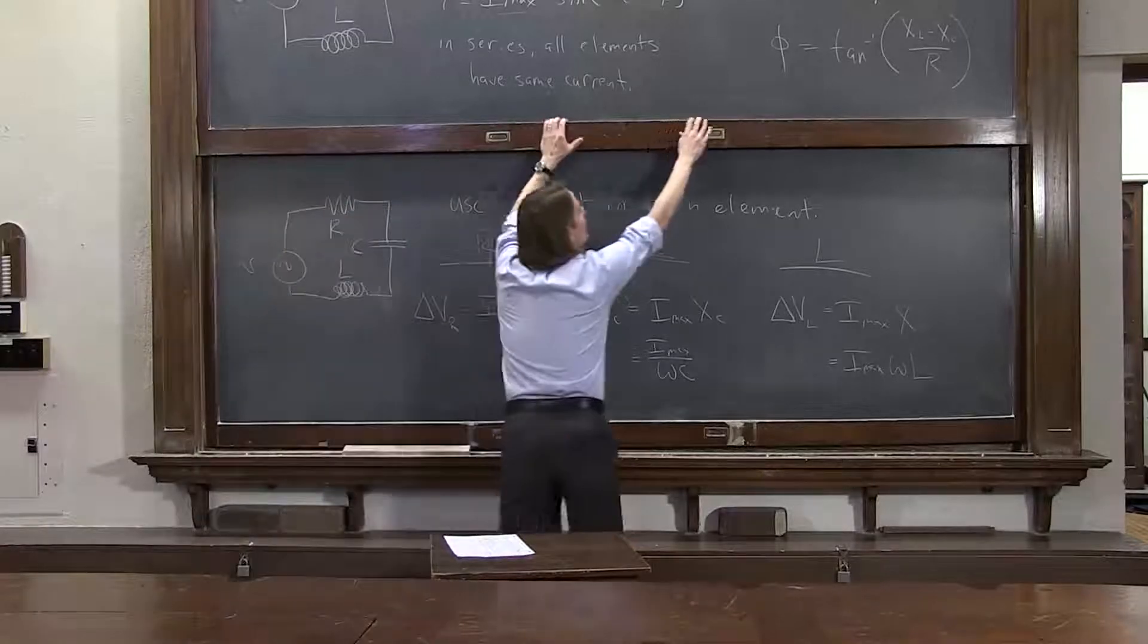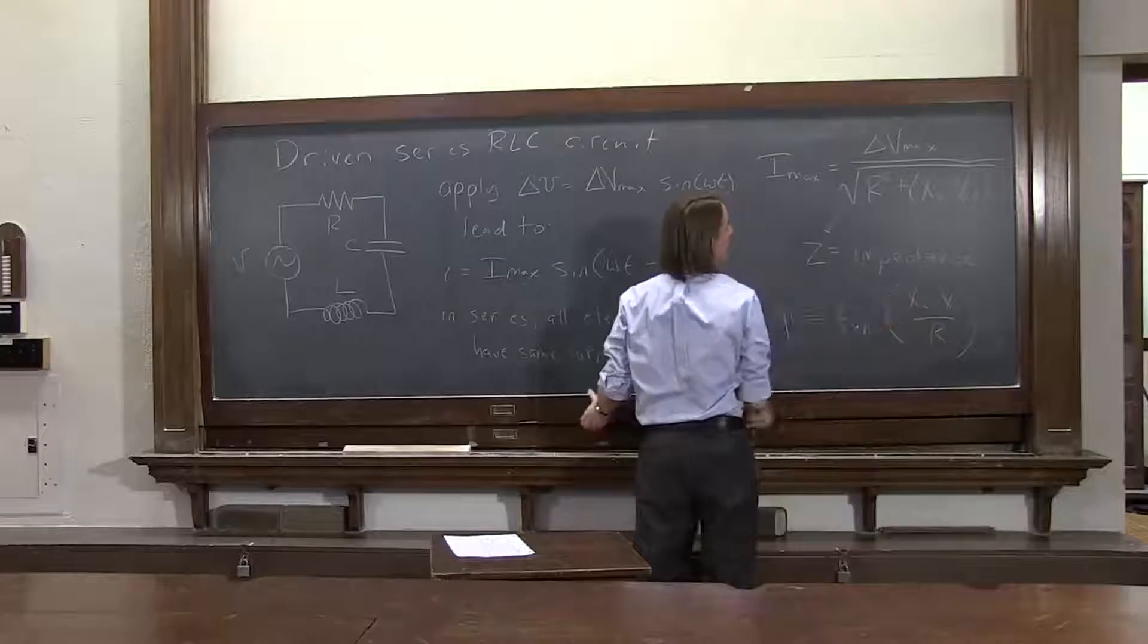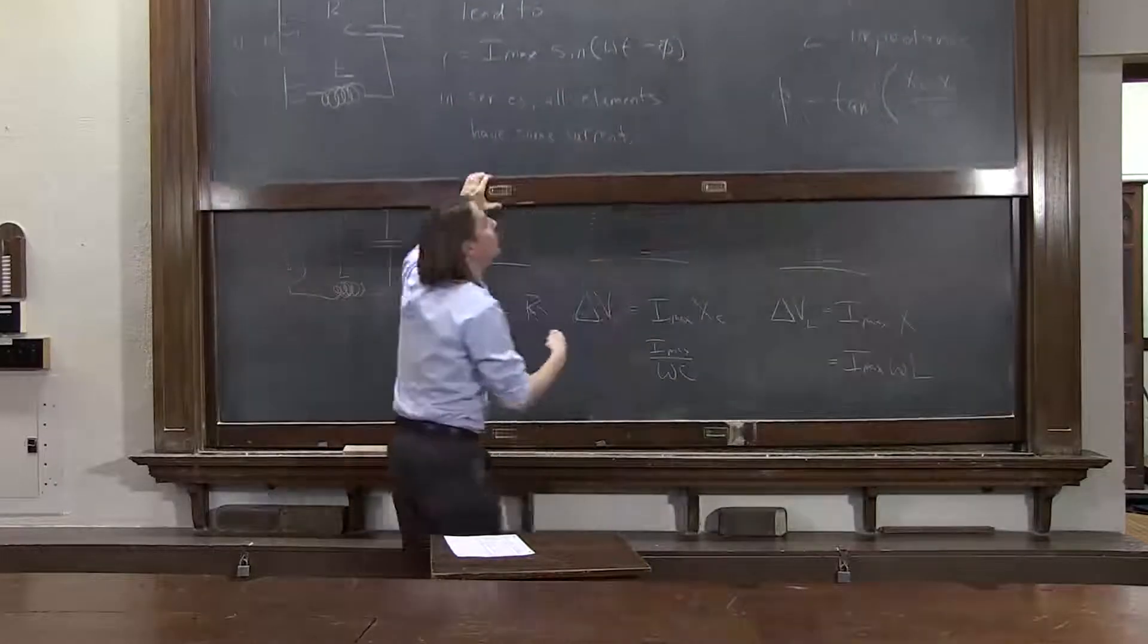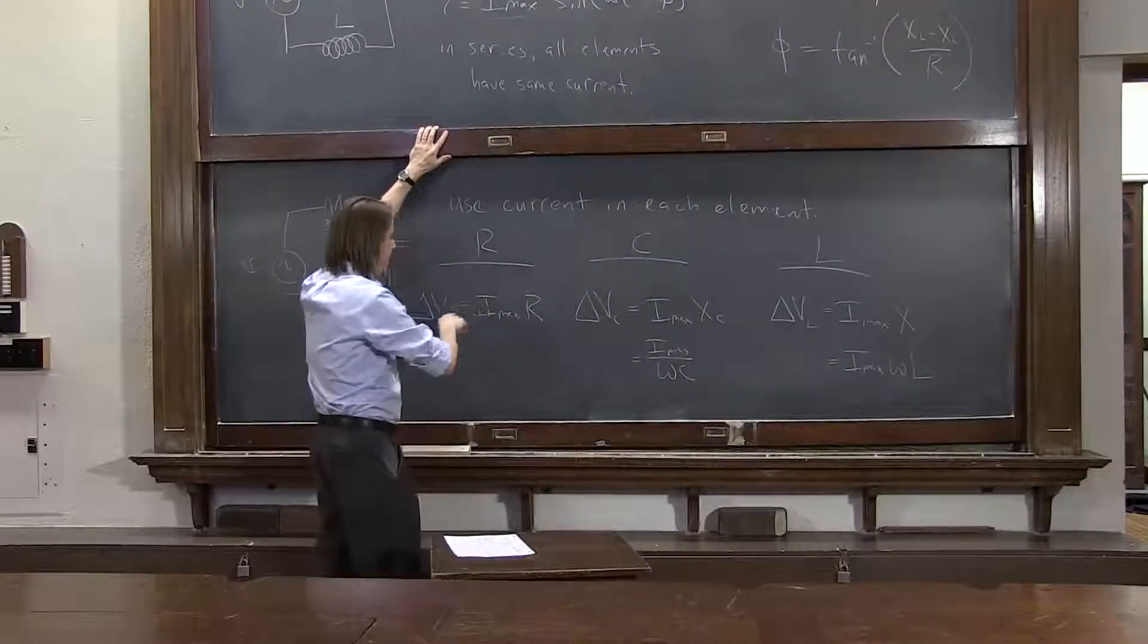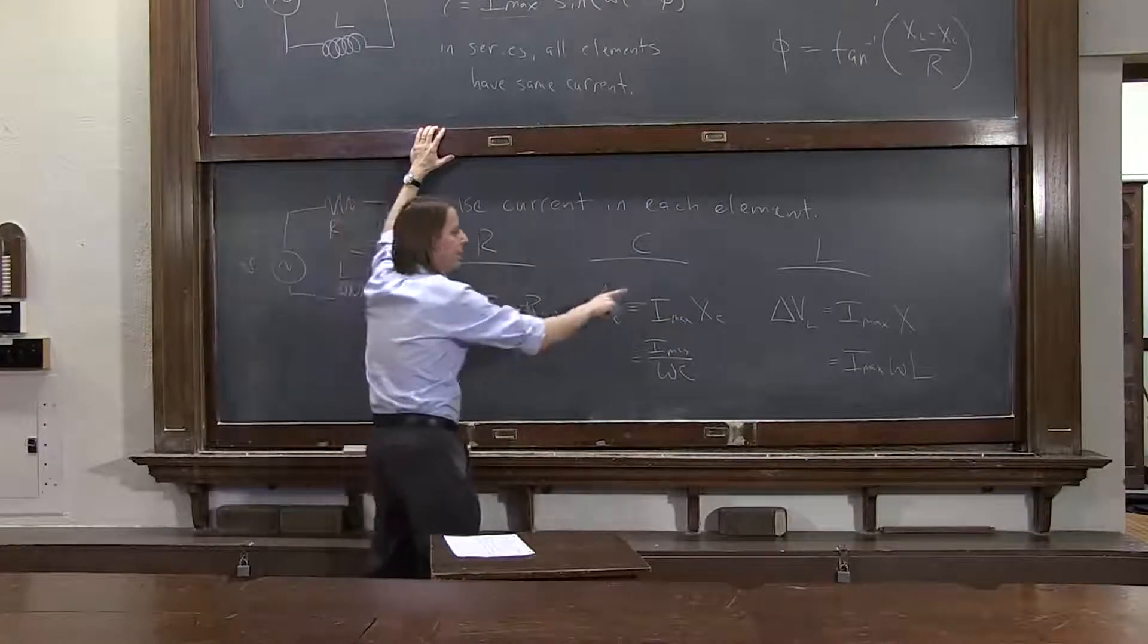So with these, right off the bat, figuring out the current and the phase, if you want to know the phase. And then with these, you know the amplitude of the current across each element. You can also get the amplitude of the voltage across each element.